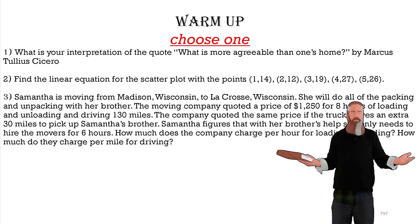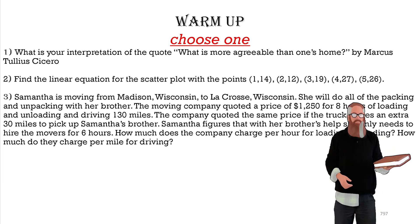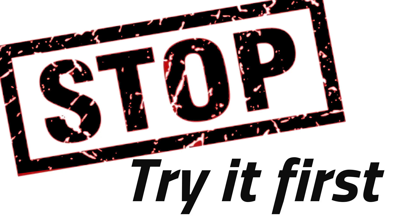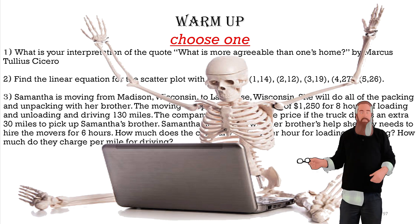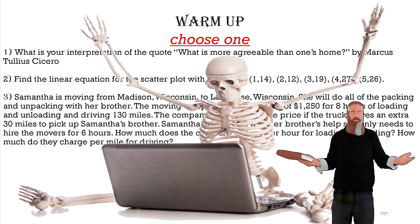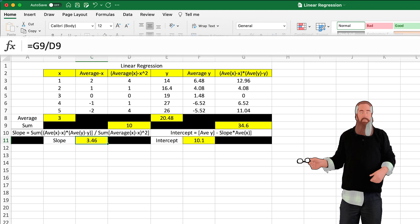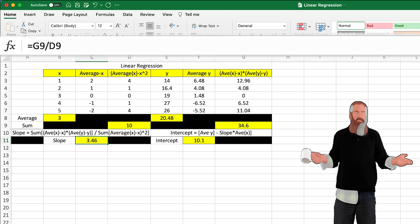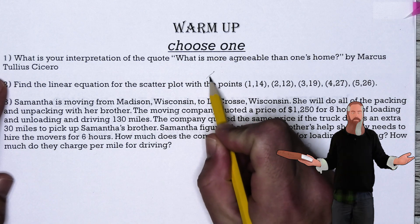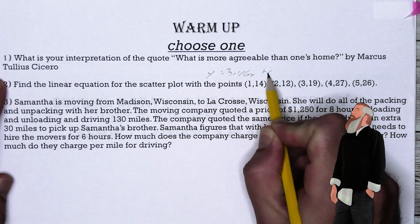Before we get into it, let's do warm-up number two: find the linear equation for the scatter plot with the points (1,14), (2,12), (3,19), (4,27), and (5,26). In a previous lesson we used the line of best fit on a spreadsheet, so let's use that now. I filled in all the x and y values, calculated the slope, and found the y-intercept. Our line became y = 3.46x + 10.1.